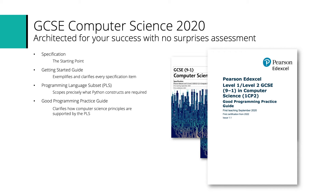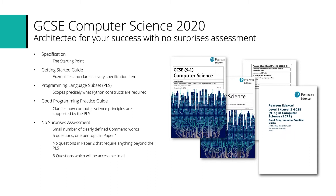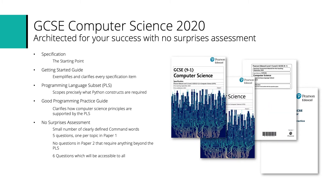Take a simple example: the concept of constants, which in Python does not really exist, because Python is very adept at changing the types of variables. What we cover in the Good Programming Practice Guide is that our young people deserve to understand what the concept of a constant is. We will be introducing it in the computer science learning and assessment and dealing with it by a simple syntactic convention. That's just one example — there are others in the Good Programming Practice Guide. I strongly recommend that all four of these documents are looked at in detail.